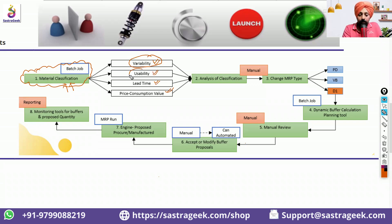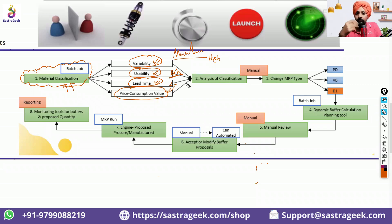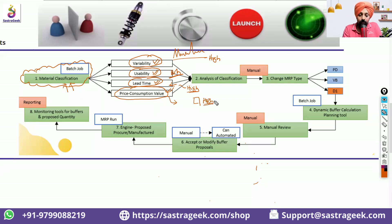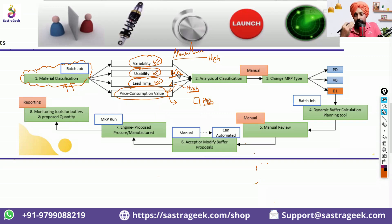Based on these parameters, you can decide which materials should maintain buffer stocks. Fluctuations — high or low; usability — whether one raw material is linked with 100 finished goods; lead time — if it's more than 10 days, it's considered high; and price consumption value — if it's in your top 20 high-value items. If all parameters are high — high lead time, high value, high usability, high demand fluctuation — it becomes a critical material.